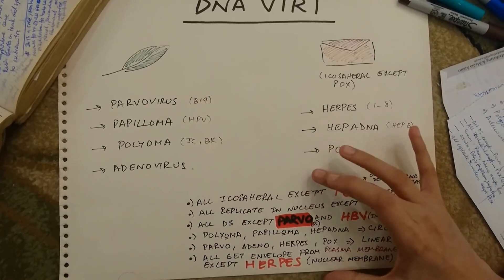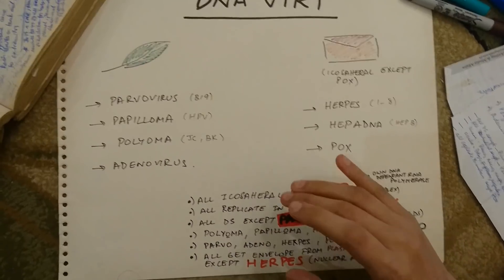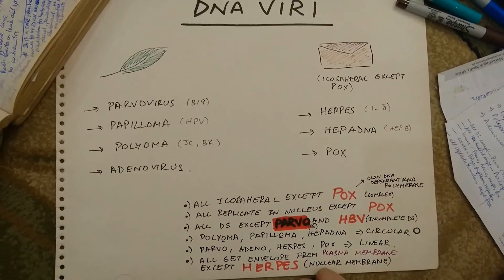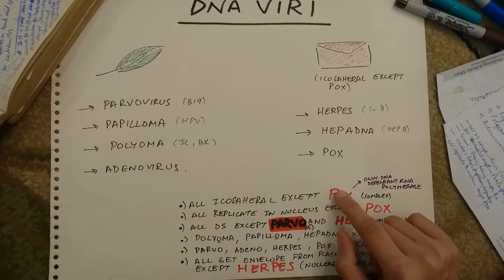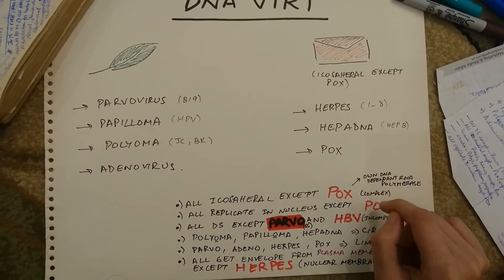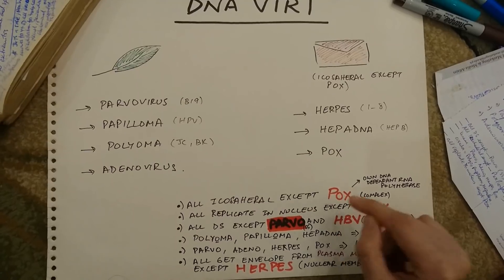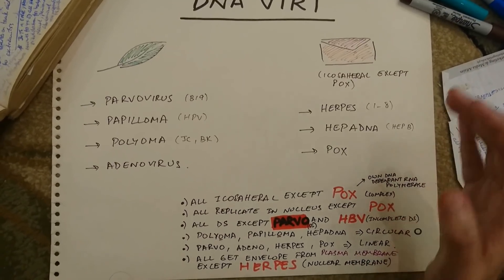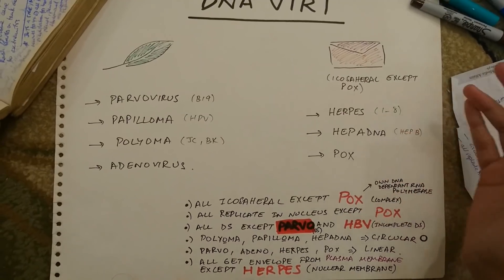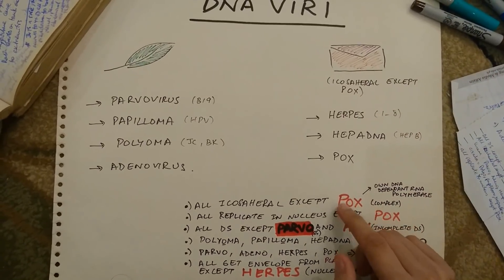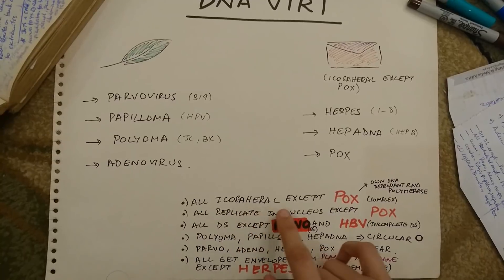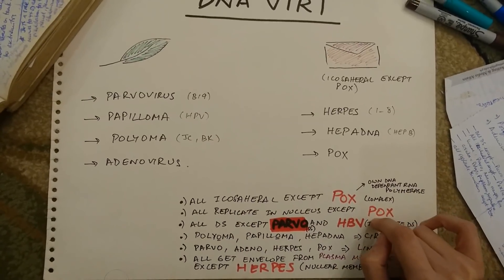After that I have put down a small summary of differentiating features of each of these viruses. First, they all have an icosahedral envelope except for pox. One more thing about pox is that it carries its own DNA-dependent RNA polymerase, which means that it can replicate outside the nucleus. The reason all other DNA viruses need the nucleus to replicate is that they don't have their own DNA-dependent RNA polymerase — which pox does. So pox replicates outside the nucleus. All replicate in the nucleus except pox — pox is outside the box.